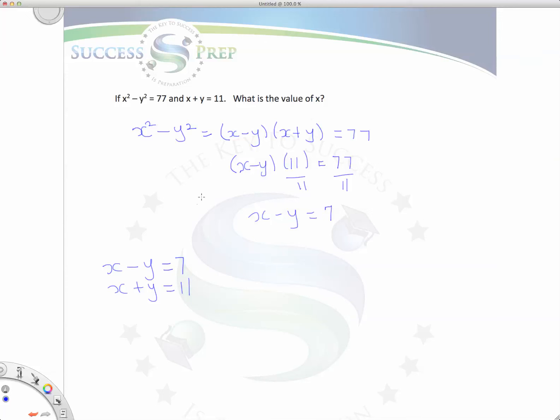Go ahead and solve these simultaneously. We're solving for the value of x. So to solve for x, I can go ahead and add these two equations together. To add these two equations together, x plus x gives you 2x. Negative y and positive y, those will cancel out. And 2x would be equal to 7 plus 11, which is 18. If the value of 2x equals 18, go ahead and divide both sides by 2. The value of x would be equal to 9.